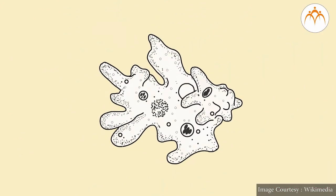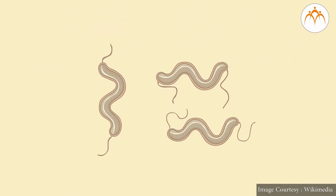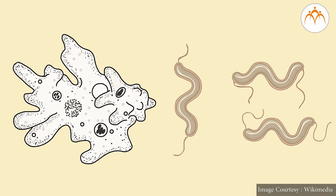Students, do you know amoeba and bacteria? How many cells do they have in their body? Organisms like amoeba and bacteria have only one cell — that is, they are unicellular.